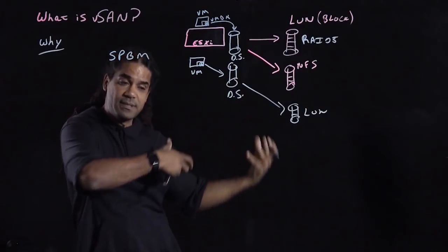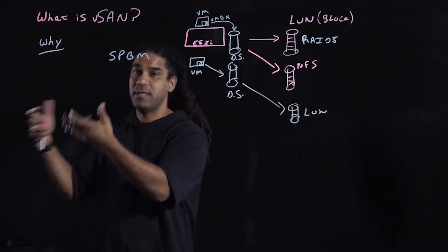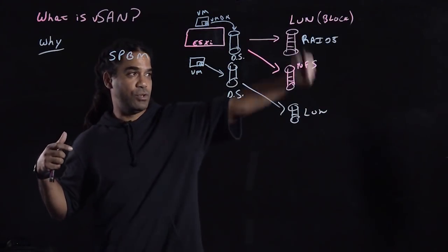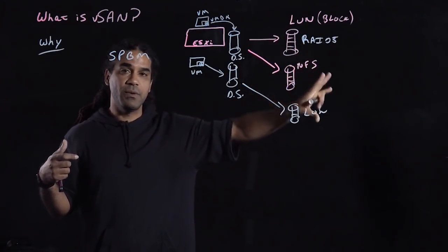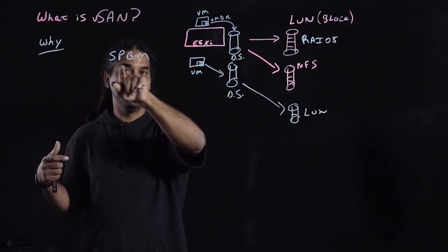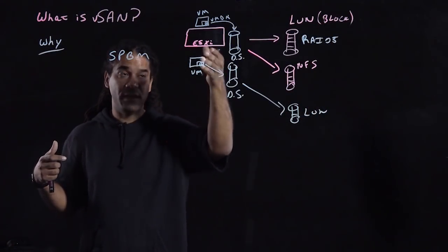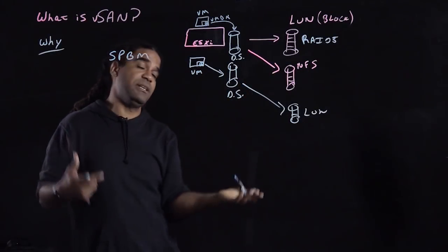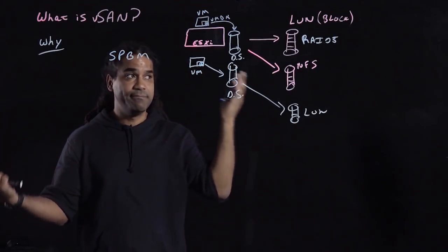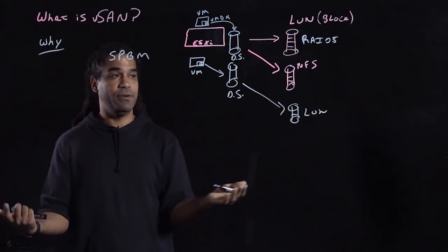So now when the business comes back and says, 'Hey, we need this, we have this business need,' and the developer says we need to deploy this application, waiting for the storage administrator to provide you those storage services is no longer required. All you need to do is tell vSphere, for this VM I need the equivalent of RAID 5 or RAID 6 protection, and voila, vSphere does this automatically for you.